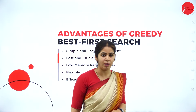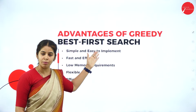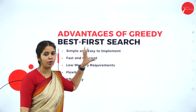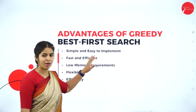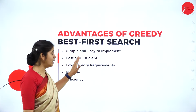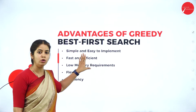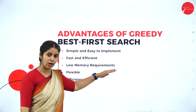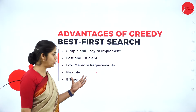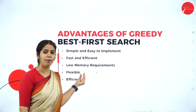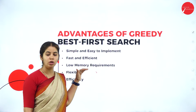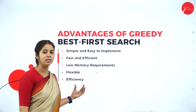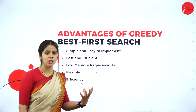Let's see the advantages and disadvantages of best first search. It is simple and easy to implement, since we have prior information about the heuristic values — how much cost is needed to reach the goal node. It is fast and efficient because we can compare values directly. It requires very low memory to execute the searching. It is also flexible — it can be applied to different applications. As it concentrates on less cost, it is very efficient and can search elements very fast in terms of time efficiency.